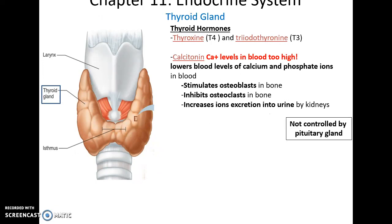The thyroid gland also secretes calcitonin, which responds to calcium levels in the blood being too high. When released, it lowers blood levels of calcium and phosphate ions by stimulating osteoblasts to build up bone tissue and take calcium out of the blood, inhibiting osteoclasts to prevent bone breakdown, and increasing calcium ion secretion in urine to get rid of excess calcium.